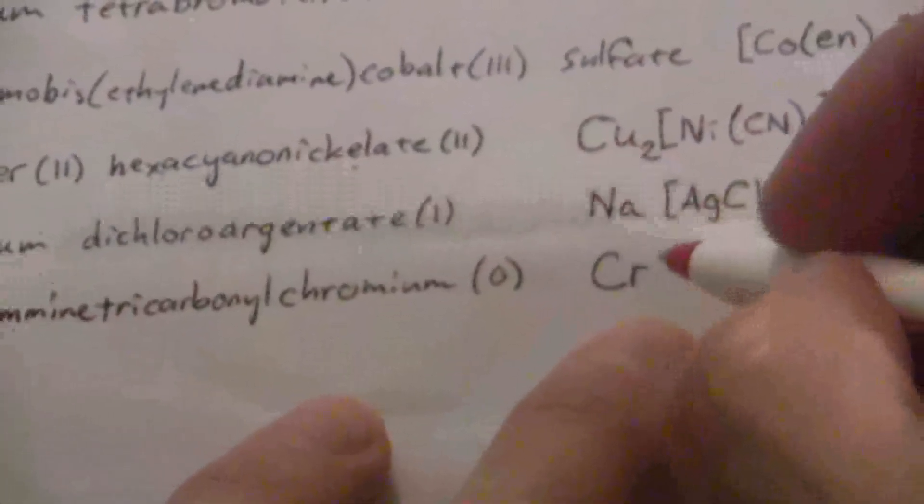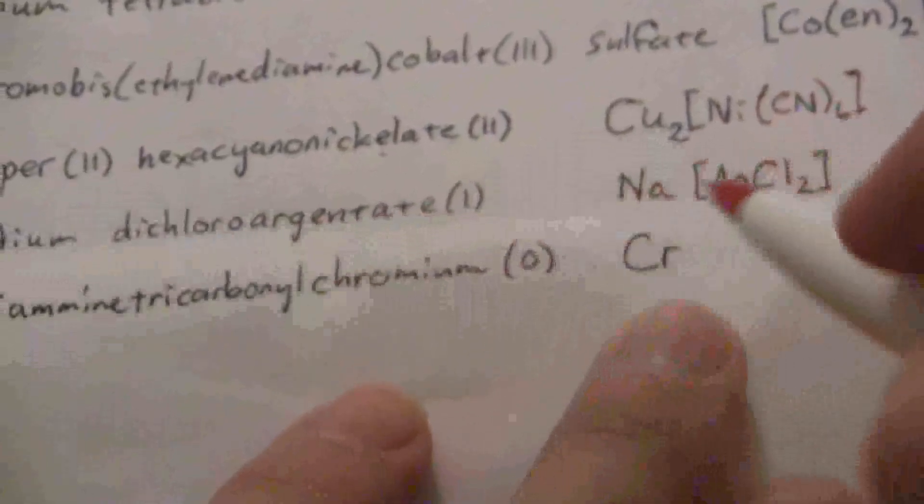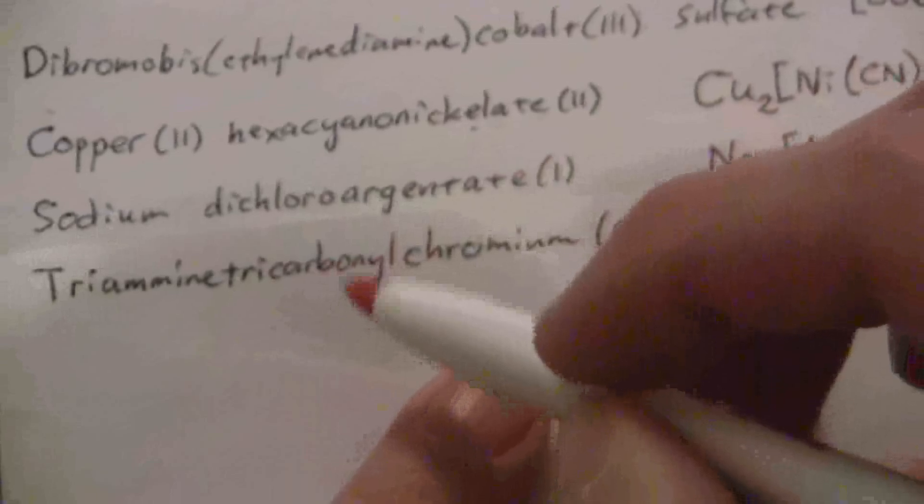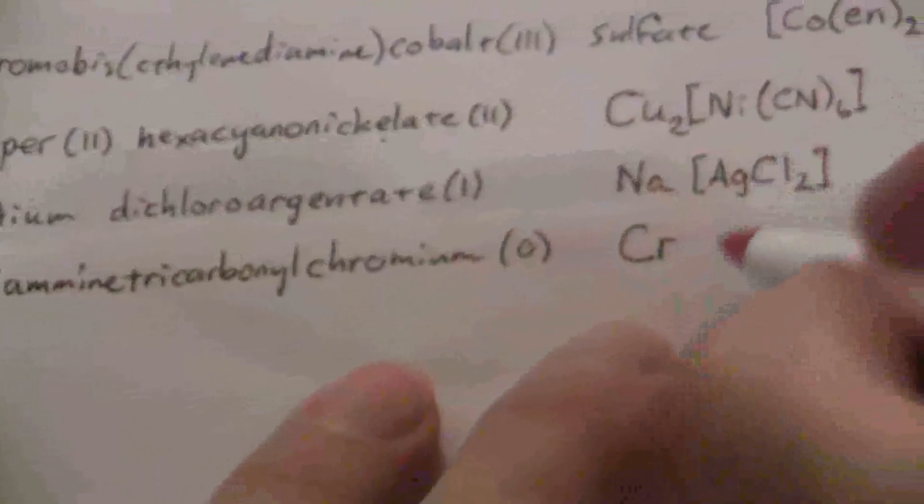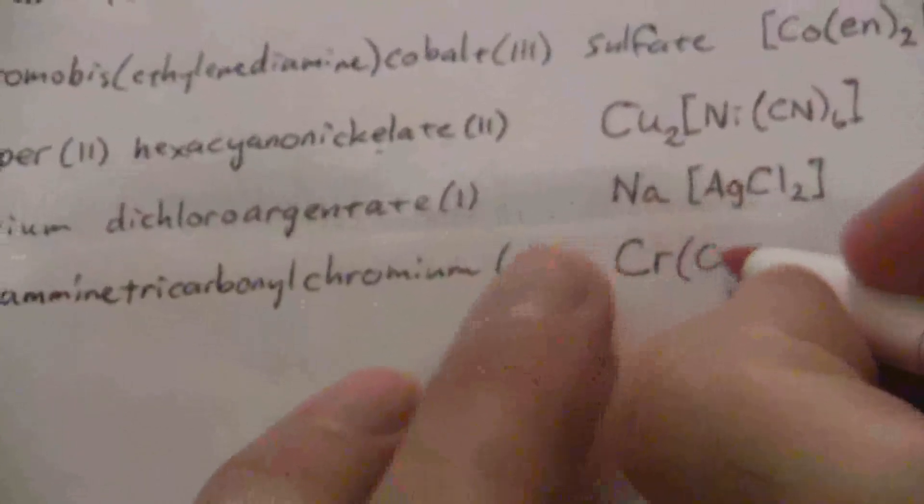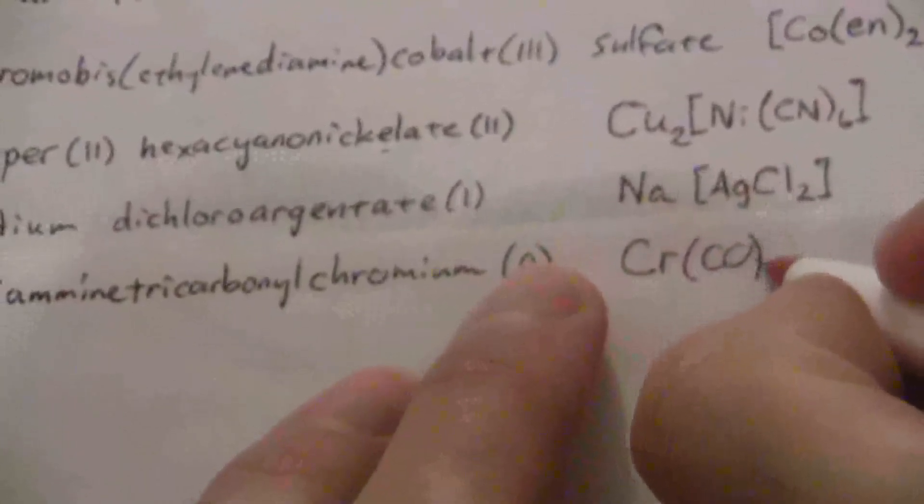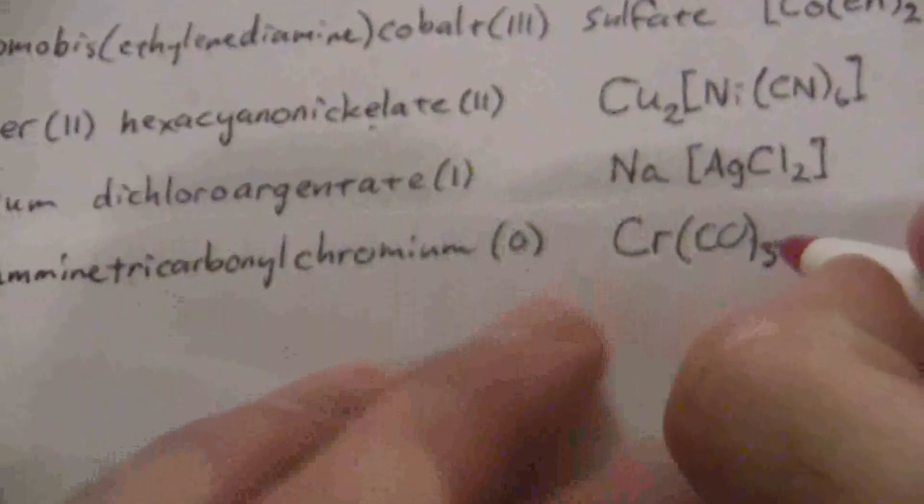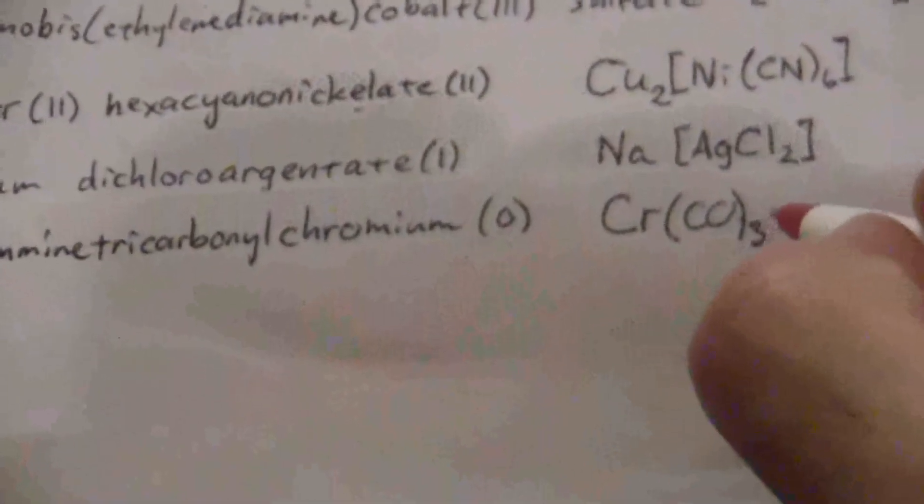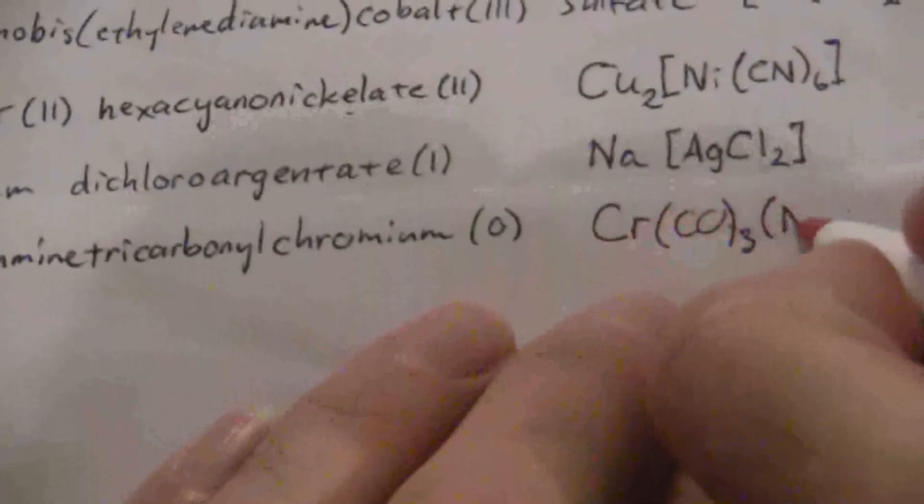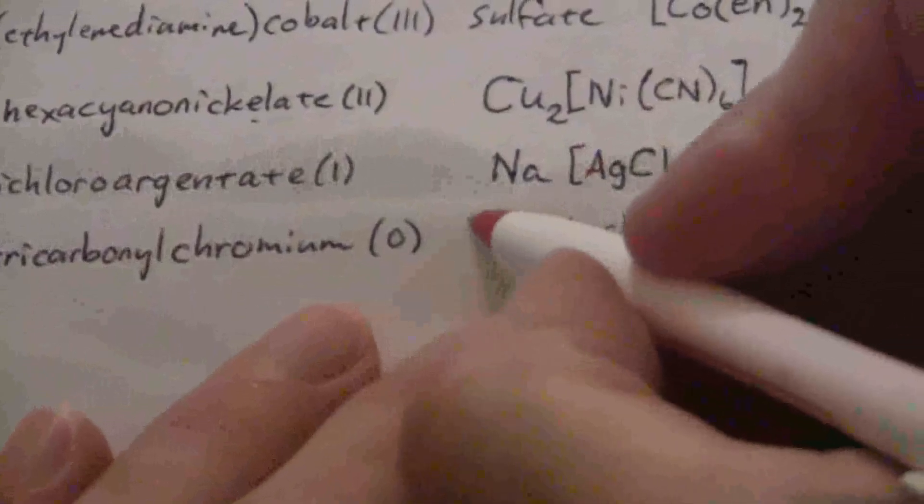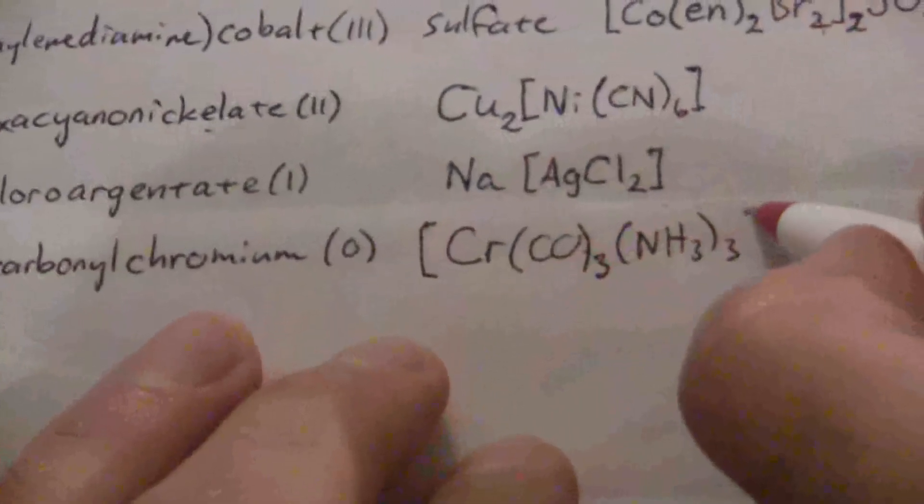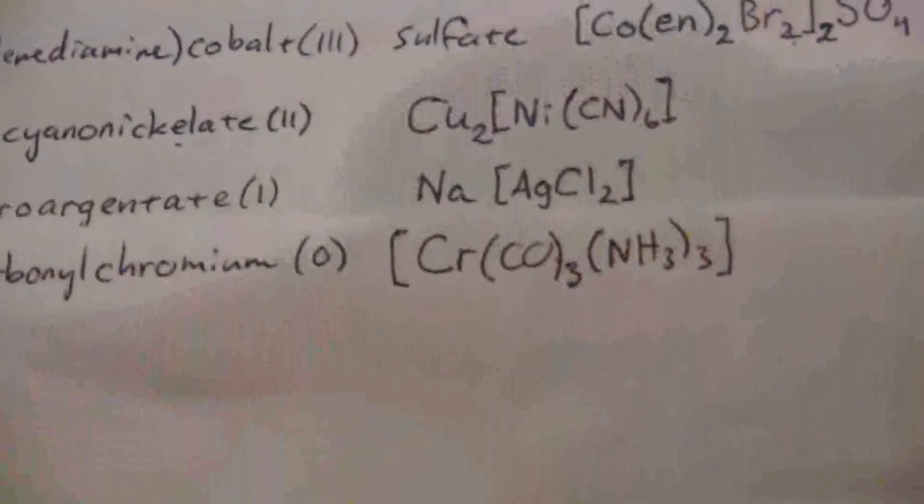The difference being that in the formula, we do it by the chemical symbol. So for carbonyl, it's CO, for amine, it's NH3, so C comes before N, so we're going to put the CO, the carbonyl, the three carbonyls there, and then the three amines, or the three ammonia. And because this is a coordination compound, we put that in brackets.